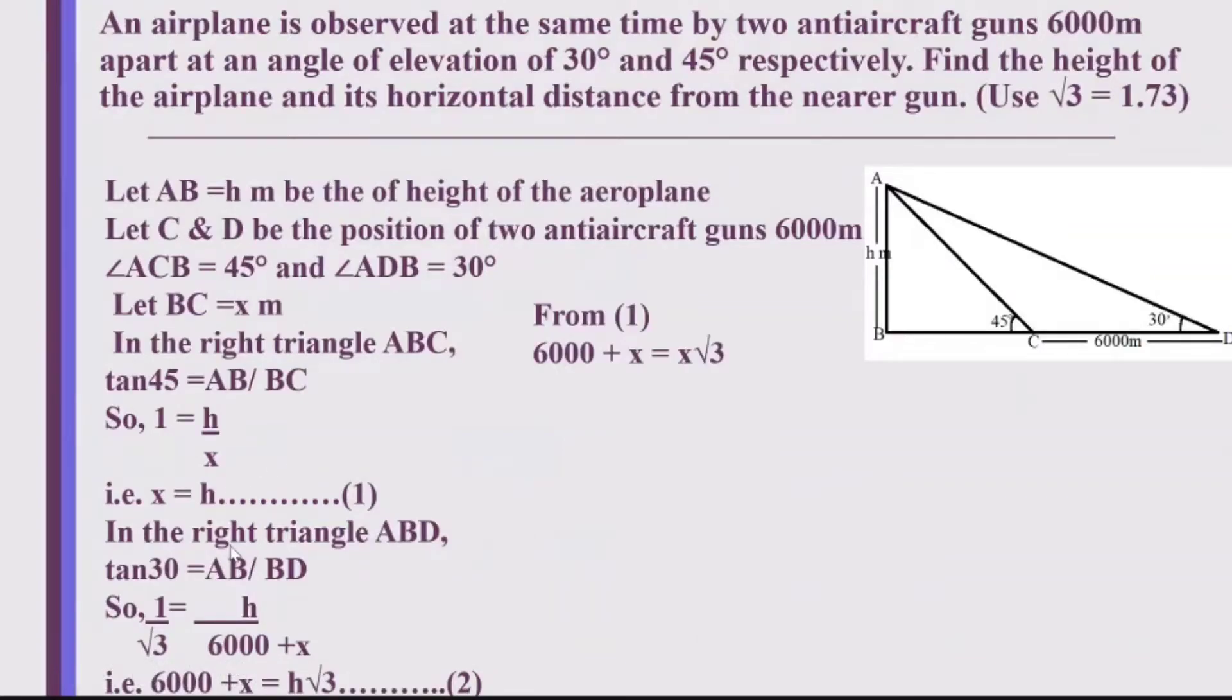Now, from the first equation, instead of H I put X and I get 6,000 plus X is equal to X root 3. So, I get root 3 minus 1 into X is equal to 6,000 which gives me X is equal to 6,000 upon root 3 minus 1.